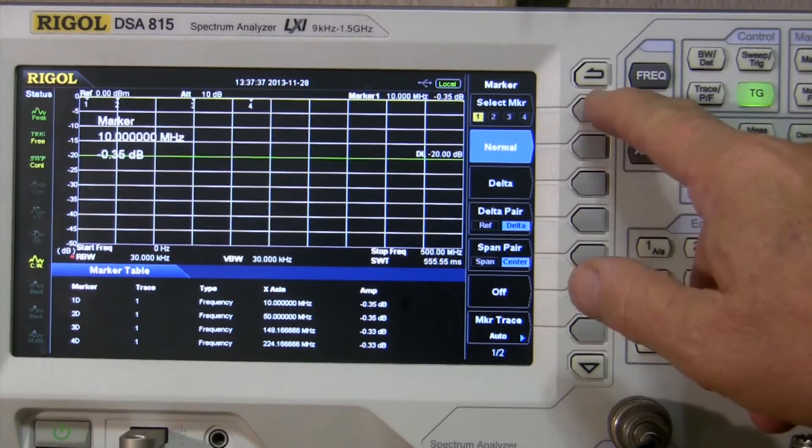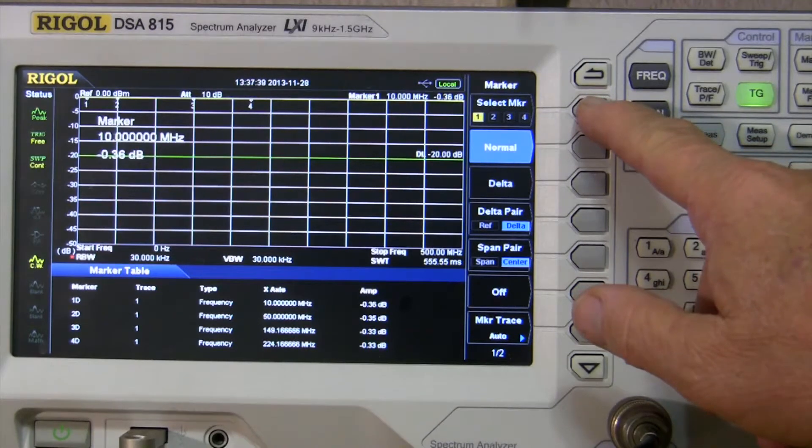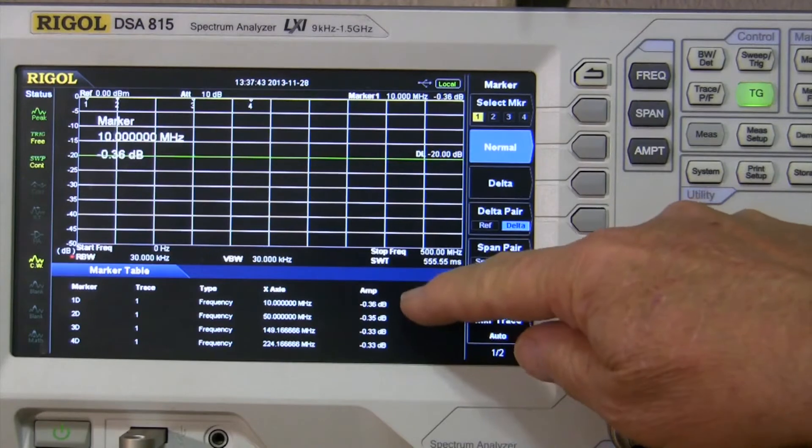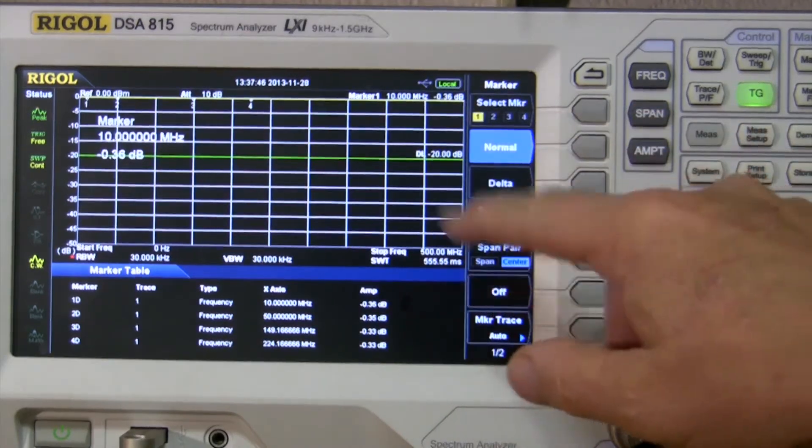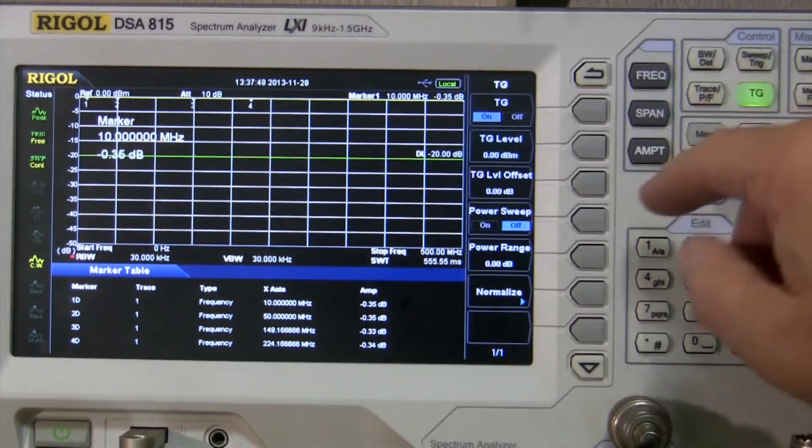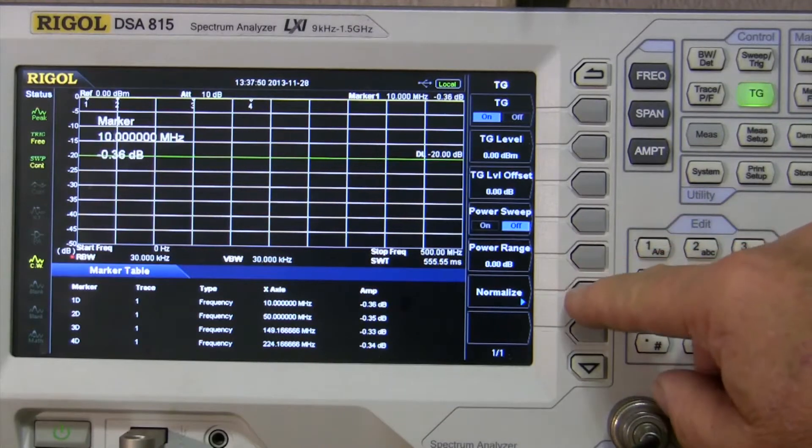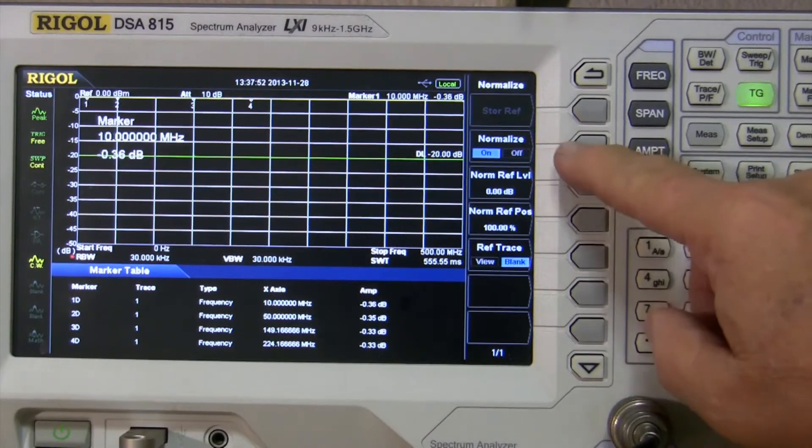And so each of the markers has been adjusted accordingly, so there you can see the losses right now. This has drifted a little bit, so let's do this.